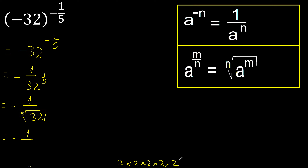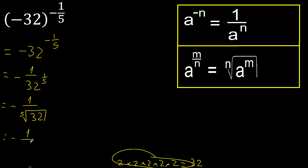5 equal numbers: 2 multiplied by 2 is 4, multiplied by 2 is 8, multiplied by 2 is 16, multiplied by 2 is 32. Therefore this is 2, minus.